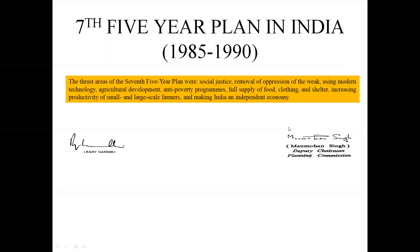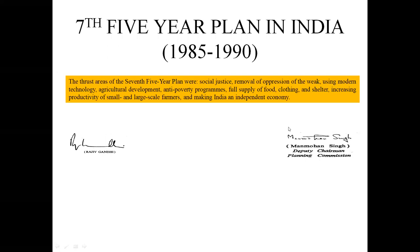Today we are going to focus on the Seventh Five-Year Plan in India. The basic thrust area of this plan was to enhance social justice through supply of new or improved sectors like education, health, and family welfare measures, which were given more emphasis. Modern technology in agriculture and new anti-poverty schemes were also introduced, along with food security.